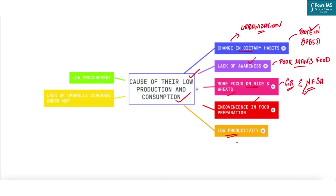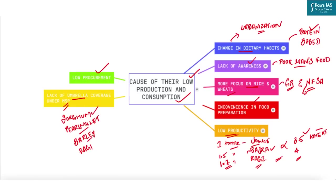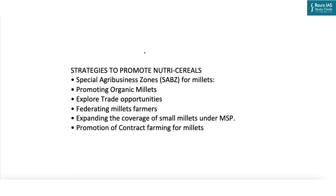Low productivity is another challenge: the national average yield is roughly 1 ton per hectare for jowar, 1.5 tons for bajra, and 1.7 tons for ragi, compared to 3.5 tons for wheat and 4 tons for paddy. There is also low procurement — the quantity of coarse grains procured for the central pool under the National Food Security Act has been negligible. Finally, there is a lack of umbrella coverage under the Minimum Support Price — the government declares MSP for sorghum, pearl millet, barley, and ragi only, making farmers hesitant to grow other millet crops.